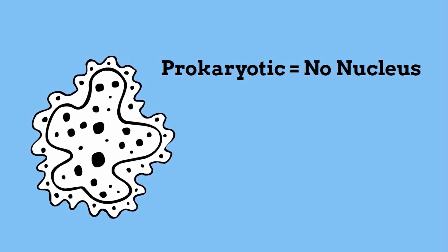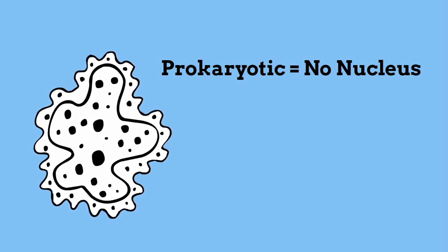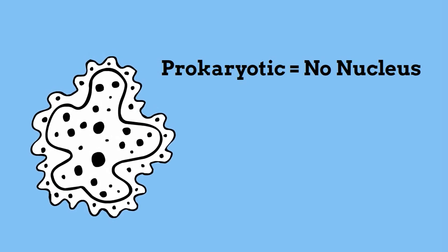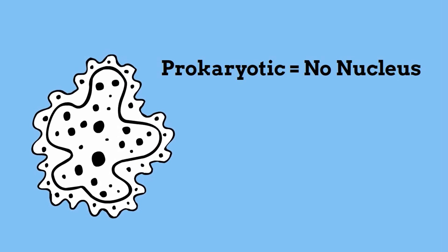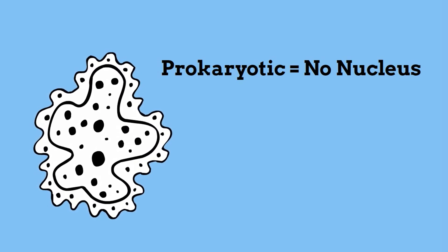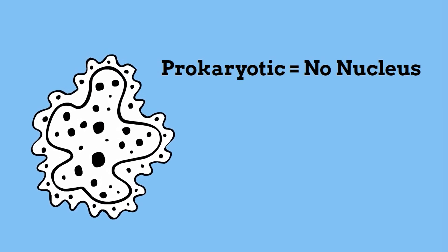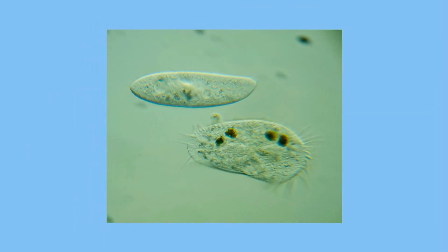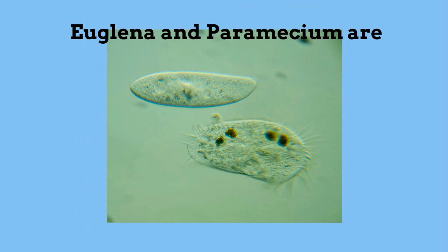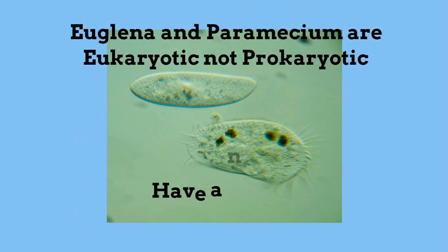Unicellular organisms can be both eukaryotic and prokaryotic. Bacteria are unicellular organisms that are prokaryotic. They do not have a nucleus or membrane bound organelles. Euglena and paramecium are unicellular organisms that are prokaryotic and have a nucleus.